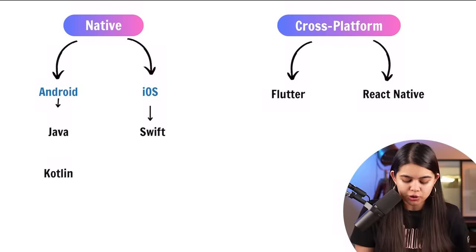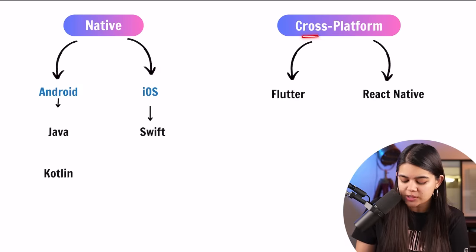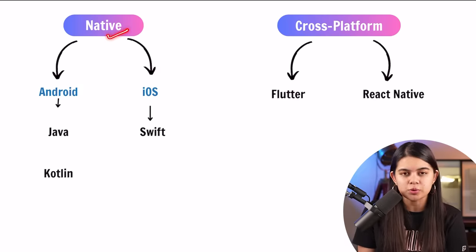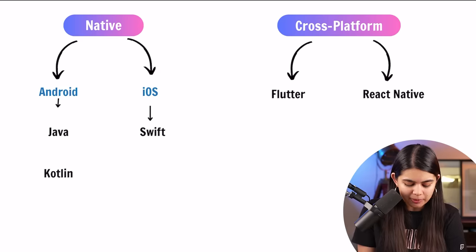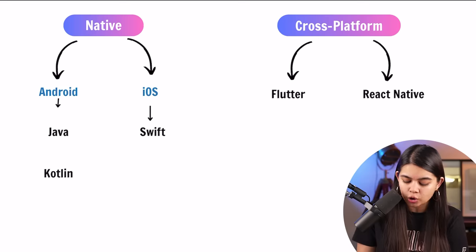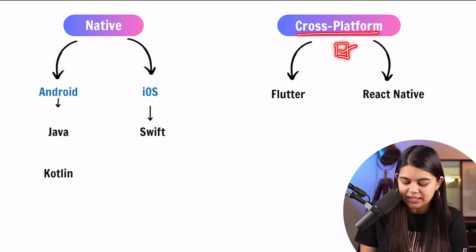If we create apps, we have two choices: either we can create native apps, or cross-platform apps. Native apps are those which will either work on your Android devices or your iOS/Apple devices. Cross-platform apps are those which you create once, and they will work on both Android and iOS devices.